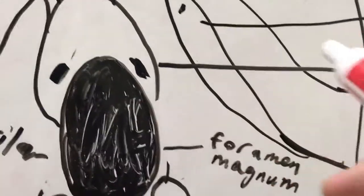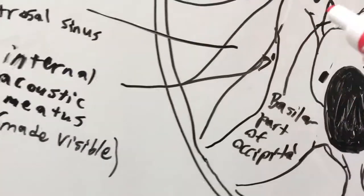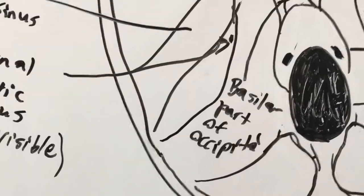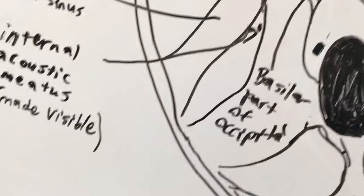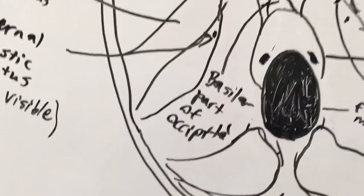Here we have the basilar part of the occipital. And then we have, here is the hypoglossal canal. The internal acoustic meatus, by the way, that's where the vestibular cochlear nerve, cranial nerve eight goes through. That's basically all your sense of hearing and your balance partially.